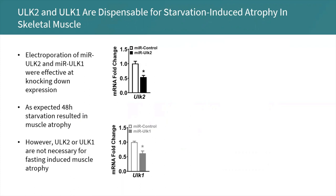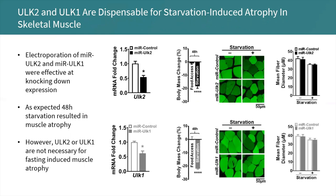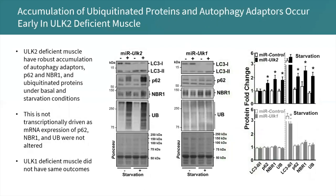Importantly, fasting or starvation induces autophagy, and we wanted to examine the role these two proteins played under basal autophagy — occurring at normal conditions — and under starvation-induced autophagy. Upon 48 hours of starvation, mice lost about 20% of body mass and had a reduction in myofiber size. However, the absence of ULK-2 or ULK-1 did not protect against starvation-induced atrophy at 48 hours, demonstrating that ULK-2 and ULK-1 are dispensable for starvation-induced atrophy in muscle.